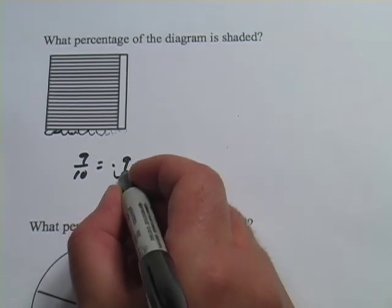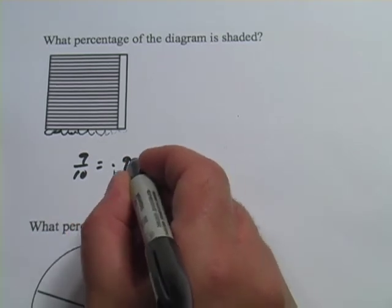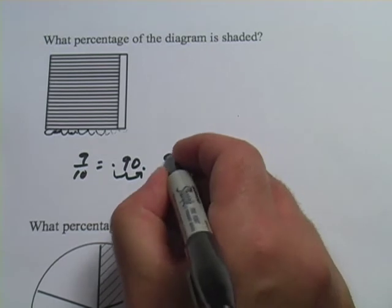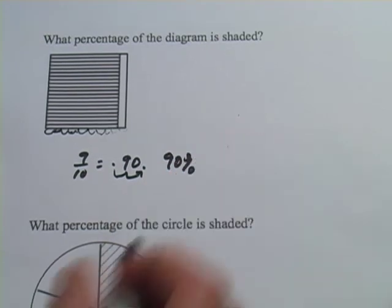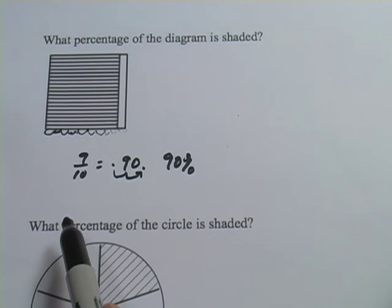And then to make a percentage, you move that decimal point over two places, and it would be 90%. And that would be a pretty good estimate about how much of that block is shaded.